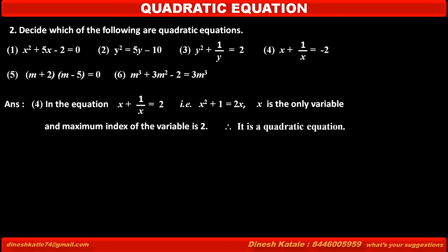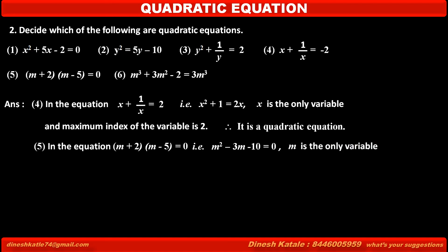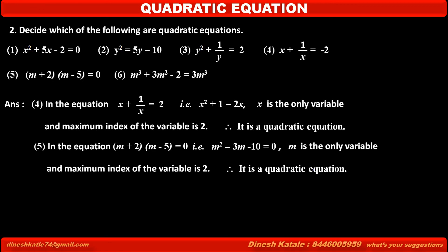The fifth equation is: (m + 2)(m - 5) is equal to 0. In this equation, the product of two brackets is given. So first we multiply these brackets to get the equation in proper form. Solving this product, we get m squared minus 3m minus 10 is equal to 0. Here, m is the only variable, and the maximum index of the variable is 2, since m squared has the highest power 2. The degree of this equation is 2, so it is a quadratic equation.